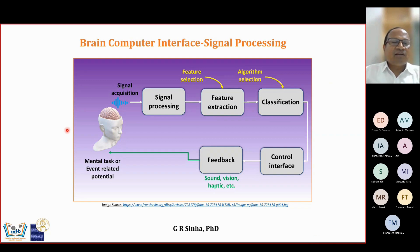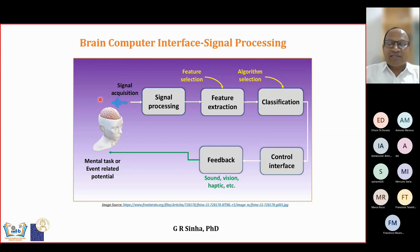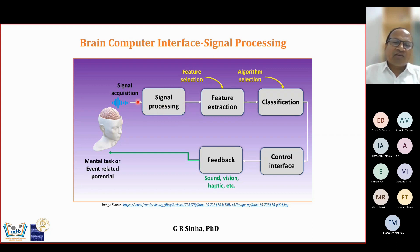The focus here is more on signal processing. There is a brain, and the signal is acquired. Signal acquisition is an essential part of signal processing. If the signal acquisition is not correct, signal processing and further analysis are badly affected. Signal processing is a single block, but there are a number of operations which take place inside this box.